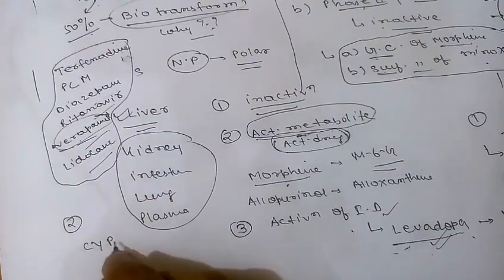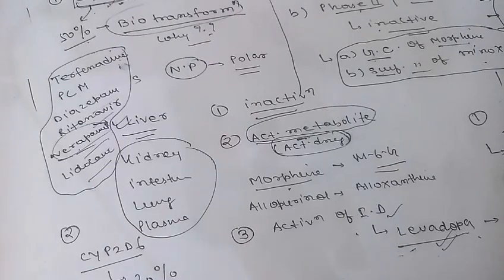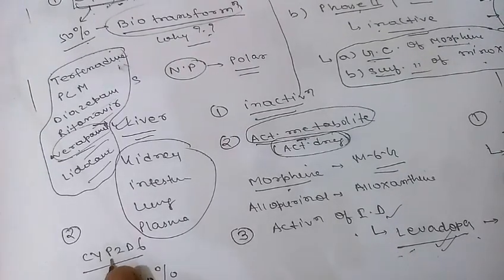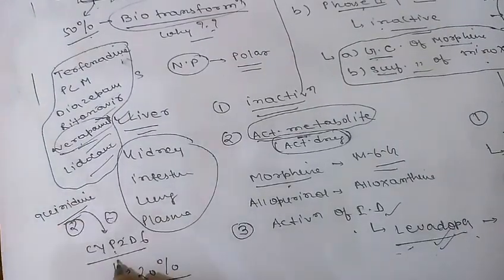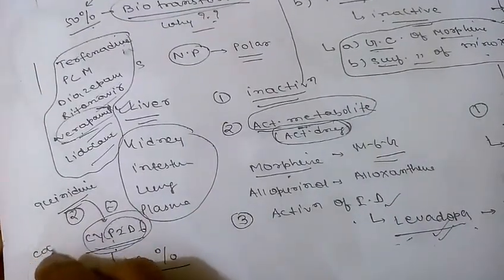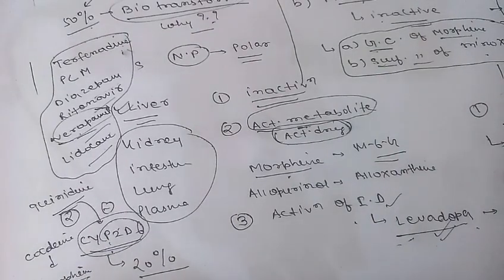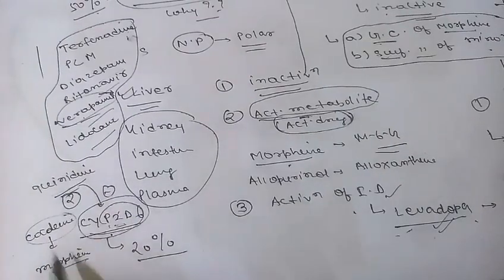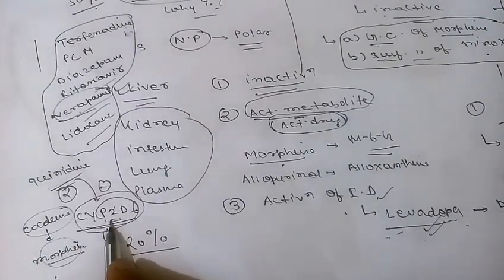CYP2D6 is responsible for the biotransformation of 20% of drugs, including tricyclic antidepressants, selective serotonin reuptake inhibitors, antiarrhythmic drugs, and codeine. An important point: inhibition of CYP2D6 by quinidine results in failure of conversion of codeine to morphine, so the analgesic effect of codeine is lost.